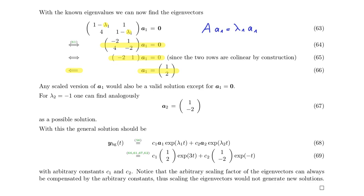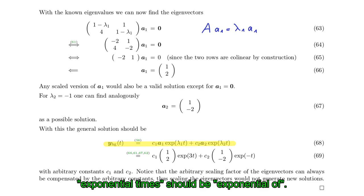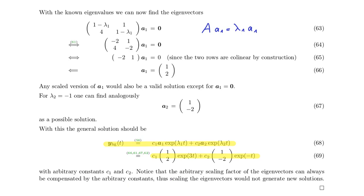In a similar way, one can figure out a second eigenvector: [1, −2]. Now that we have the eigenvectors and eigenvalues, we combine the general solution of the homogeneous system. Each solution consists of the eigenvector times the exponential of the eigenvalue times t, giving C₁ times [1,2] times exp(3t), plus C₂ times [1,−2] times exp(−t).